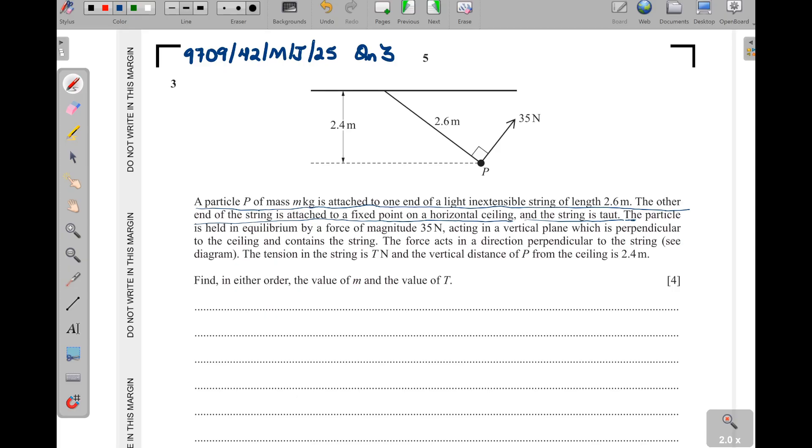That means it is straight. The particle is held in equilibrium by a force of magnitude 35 newtons acting in a vertical plane which is perpendicular to the ceiling and contains the string. The force acts in a direction perpendicular to the string, as shown in the diagram. The tension in the string is T newtons, and the vertical distance of P from the ceiling is 2.4 meters.